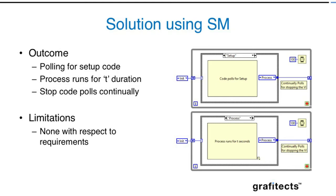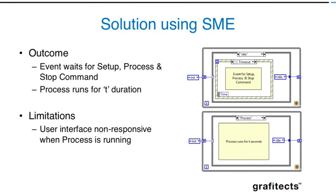Now let's try a different design pattern: state machine with events. Here, the setup, process, and stop commands are placed inside an event case. Only when we press a button do we process the corresponding functionality — for example, pressing setup triggers setup, then it waits for the next event. If I press stop, the stop event happens and the loop stops. Since the process has to run for T duration, pressing the event takes us to another state called 'process,' which runs for T seconds and then returns to idle.